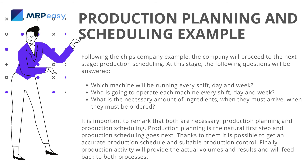Following the chips company example, the company will proceed to the next stage: production scheduling. At this stage, the following questions will be answered: 9. Which machine will be running every shift, day, and week? 10. Who is going to operate each machine, every shift, day, and week? 11. What is the necessary amount of ingredients, when they arrive, and when they must be ordered?